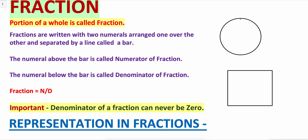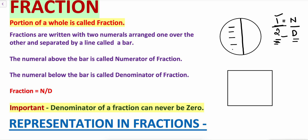Suppose this is a circle. If I divide this circle into two equal parts and I am talking about this part, it will be one out of two parts. This is how I have written the fraction — it will be written as one by two. The numeral above the bar is called the numerator and the numeral below the bar is called the denominator. So one is the numerator and two is the denominator. This is how we write fractions.